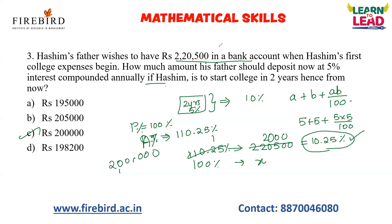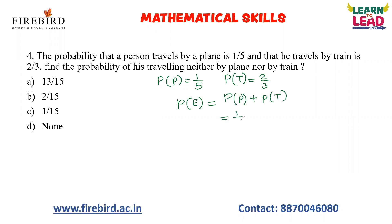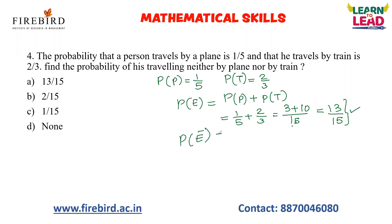Next is a question based on probability. The probability of a person travelling by plane is 1/5, and the probability of travelling by train is 2/3. The two events are completely independent, so to find the probability of travelling by either plane or train, we add them: 1/5 + 2/3. The LCM of 5 and 3 is 15, giving 3/15 + 10/15 = 13/15. But the question asks for the probability of travelling neither by plane nor by train, which is 1 − 13/15 = 2/15.